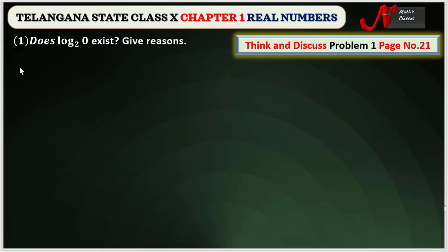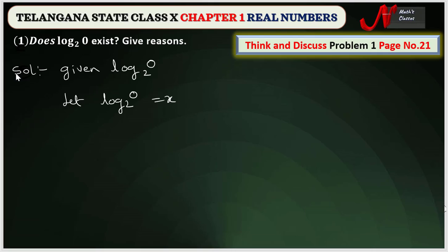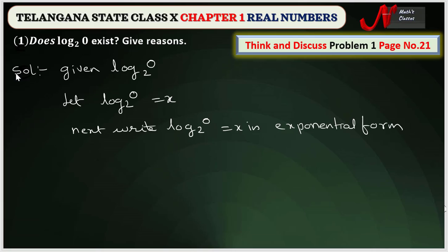To solve this problem, we have to find whether log zero base two exists or not. Let log zero base two be equal to x. Now write this into exponential form — log zero base two is equal to x in exponential form.